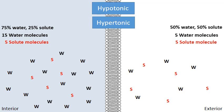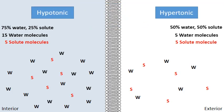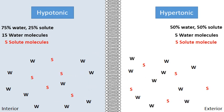With 15 water and 5 solute molecules, the inside has 20 total — 75% water and 25% solute. The outside has a 50-50 solution: 50% water and 50% solute. So the inside (left) is labeled hypotonic — it has a lower concentration of solutes, 25% versus 50%. What would happen over time? Through osmosis, water on the left will diffuse until there is equilibrium.